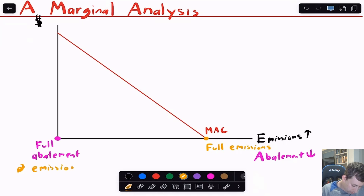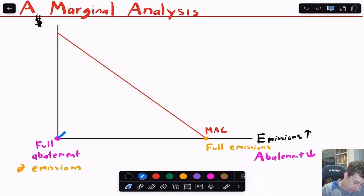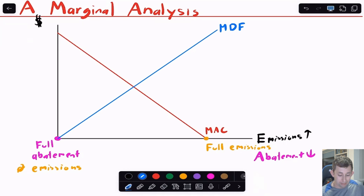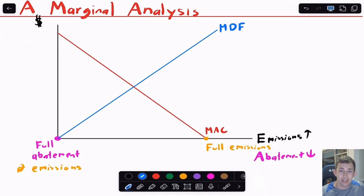That's the setup on the x-axis with the marginal abatement cost curve. On the other hand, I'm going to have this upward sloping curve — this must be the MDF curve, or the marginal damage function curve. Why is it upward sloping? Well, as I get more emissions, the air is getting dirtier and dirtier, and the extra impacts on people just get worse and worse with every unit of emissions, given that you already have so much air pollution.